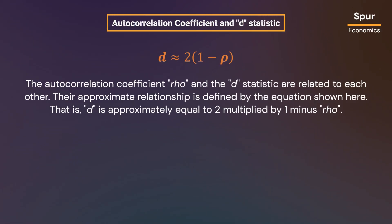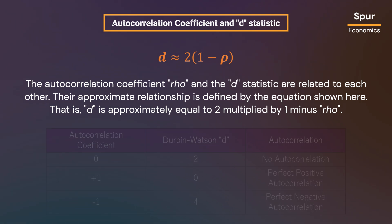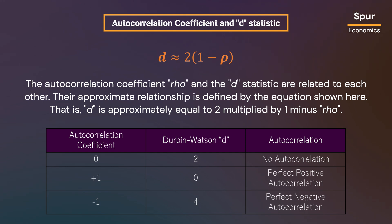The autocorrelation coefficient rho and the d statistic are related to each other. Their approximate relationship is defined by the equation shown here — that is, d is approximately equal to 2 multiplied by (1 minus rho). When the autocorrelation coefficient is 0, the Durbin-Watson d equals 2 and there is no autocorrelation. When rho equals 1, the d statistic is 0 and we have perfect positive autocorrelation. Conversely, we have perfect negative autocorrelation when d equals 4, because then the autocorrelation coefficient equals minus 1.